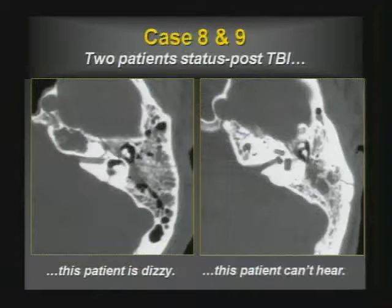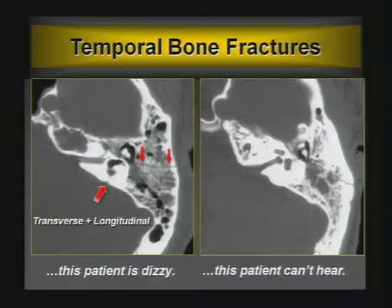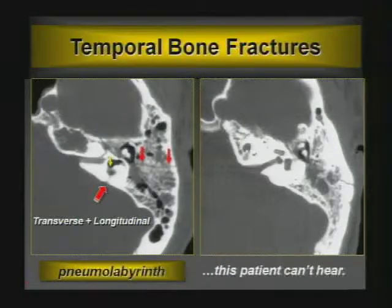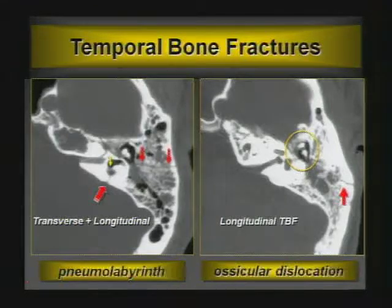Cases 8 and 9 are two patients with trauma — one dizzy, one can't hear. Both have temporal bone fractures. One has a longitudinal temporal bone fracture, oriented parallel to the long axis of the petrous bone, and we see a pneumolabyrinth — air in the vestibule — which makes these patients notoriously very dizzy. Air can also be in the cochlea. The other patient has a longitudinal temporal bone fracture, but looking carefully at the ossicles, there's too much space between the malleus and incus — incudomalleal dislocation.